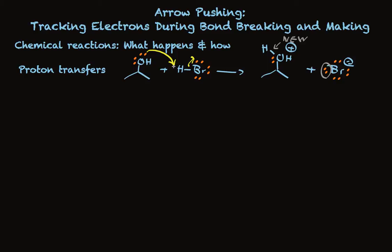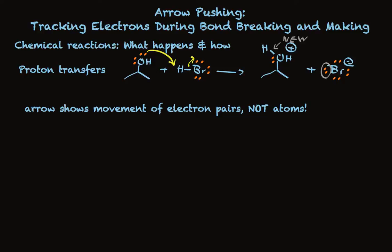The arrow shows movement of electrons, not atoms. Especially as you're becoming used to using this convention, it's easy to think of these arrows as showing where atoms are going — but that's not the case. We're only interested in tracking electron pairs, and these curved arrows are devoted exclusively to showing electron pairs.